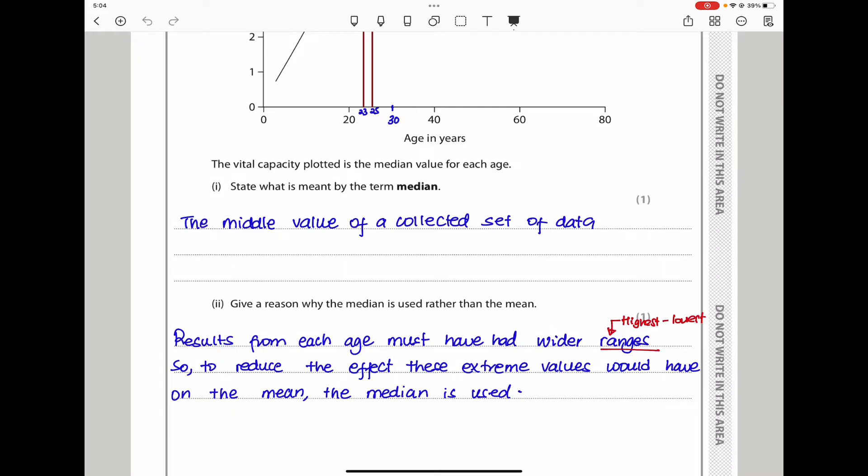Give a reason why the median is used rather than the mean. Using a mean can distort the results, most so if the highest and the lowest number are farther apart. So to make it more representative, the results from each age must have had a wider range. Since they're working with different ages, maybe the values from the people who are younger and the people who are older had a very big gap, so it will not be representative enough to use the mean, so they chose to use the median. Results from each age must have had wider ranges - that is the highest minus lowest. So to reduce the effect of these extreme values that the mean would have created, we would have to use the median.